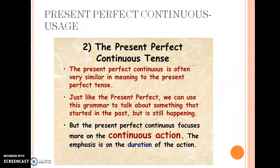Moving on to present perfect continuous. Being continuous, it uses ing, and being present perfect, it also uses has or have. Present perfect continuous is used to talk about an action that began in the past and is still continuing in the present. Remember: in present perfect, the action that began in the past is finished; in present perfect continuous, the action began in the past and is still going on. Always mention time using since or for.